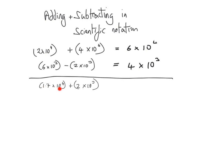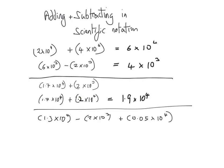Let's keep one term as it is and adjust the other. We increase the exponent from 3 to 4, so we must correspondingly decrease the coefficient by moving the decimal point one place to the left, changing 2 to 0.2. Now that the exponents are the same, we simply add the coefficients: 1.7 plus 0.2 gives 1.9, so the answer is 1.9 times 10 to the power of 4.